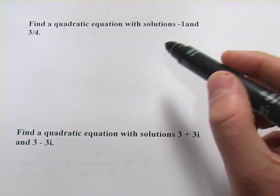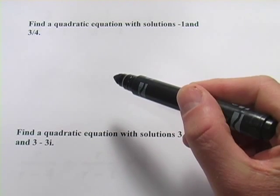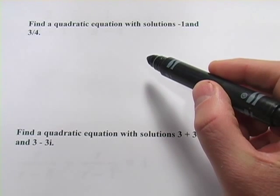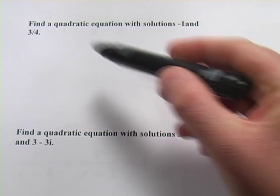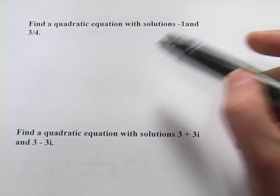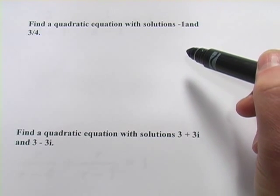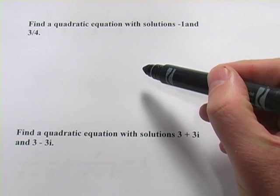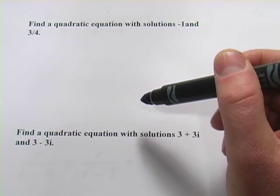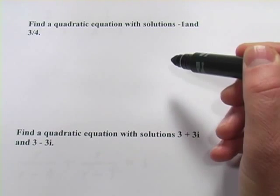In these problems, we're being given the solutions to a quadratic equation, so what x equals. And we're being asked to come up with the quadratic equation that would lead to those solutions. You're used to doing exactly the opposite, starting with the equation, ending up with the solutions. So what we're going to do here is basically go backwards.